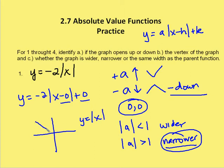The parent function looks something like this. We're going to have a graph that's upside down and a little bit more narrow, but still has the vertex at the origin.